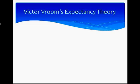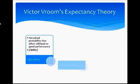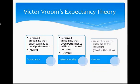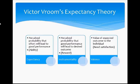The last theory of motivation discussed here is Victor Vroom's Expectancy Theory. According to him, motivation is a function of three factors: expectancy, instrumentality, and valence. Expectancy is the perceived probability that effort will lead to good performance — in other words, belief in one's ability to do a task. Instrumentality is the perceived probability that good performance will lead to a desired outcome — in other words, the belief that one will get a reward for performance. Valence is the value of the expected outcome to the individual — the belief that the reward can satisfy their needs. Only when all three factors are present can a person be motivated.